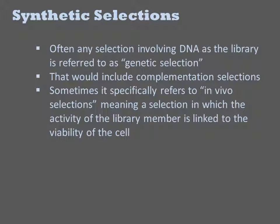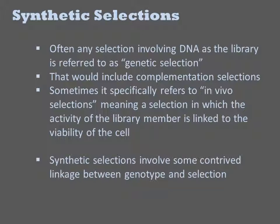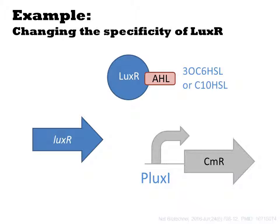Many people refer to the class of selections that involve linkage of a gene's function to its ability to grow as a genetic selection. Some folks use that term to more generally mean any selection that enriches for DNA sequences, and that would include in vitro methods like SELEX. In vivo selections is usually reserved to specifically mean the condition in which the viability of the cell is linked to a target gene. There isn't a consistent name for what I'll call here a synthetic selection, but they involve some type of genetic circuit that links the target gene's activity to survival of the cell in a more circuitous way. These methods are often the only way to probe the function of a gene, particularly when it is not a native activity of the cell.